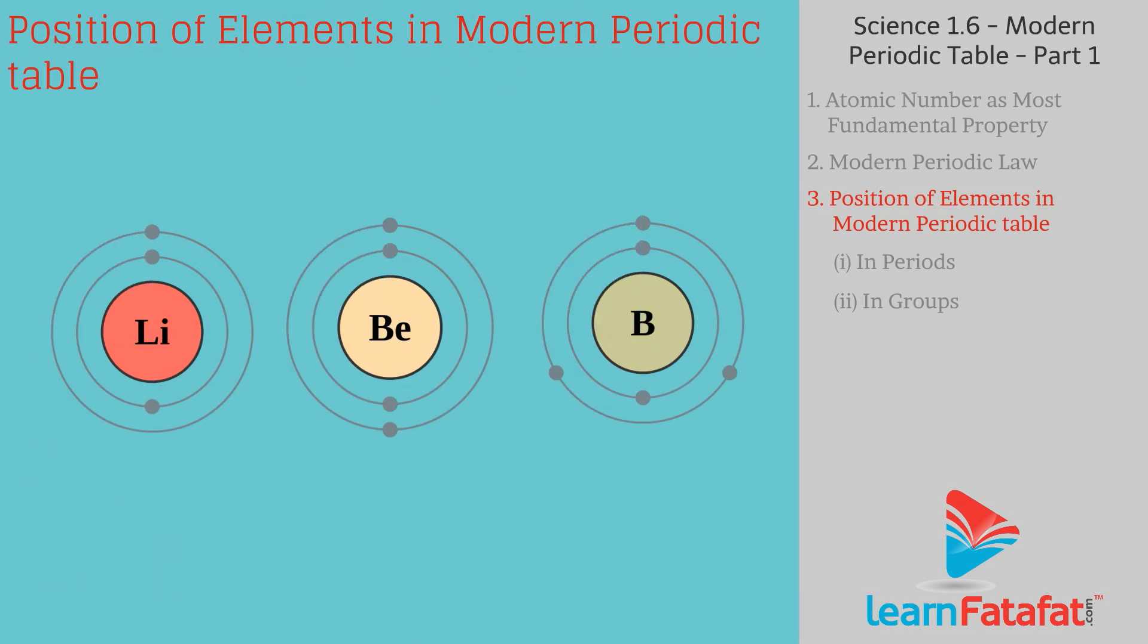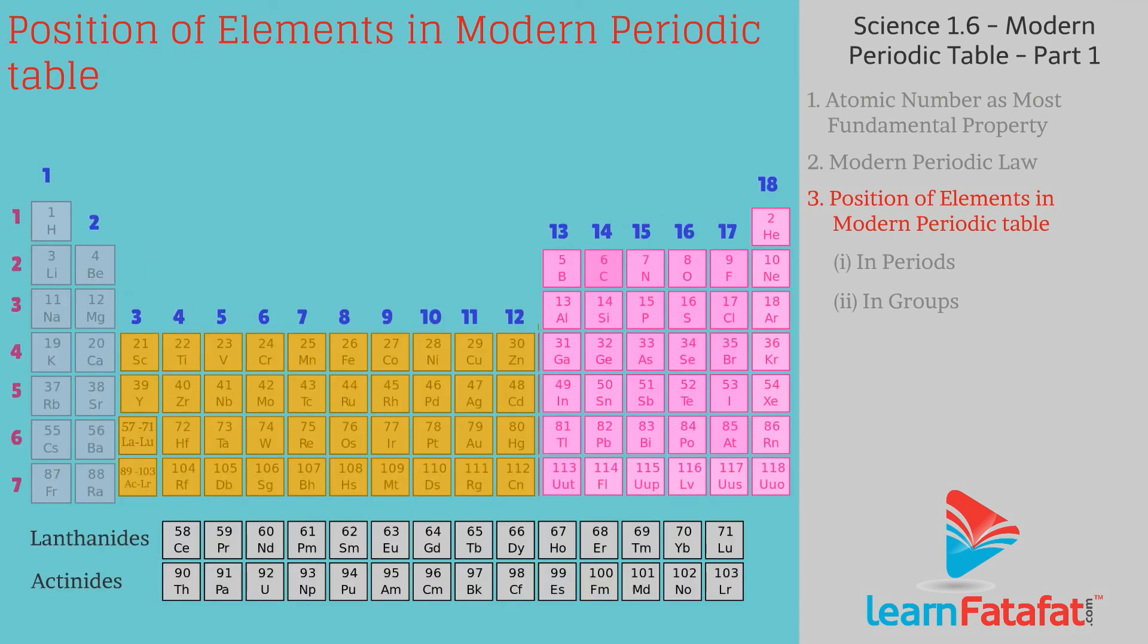Elements in the periodic table are arranged based on their electronic configuration. Accordingly, elements are divided into 4 blocks. These are S block, P block, D block, and F block.